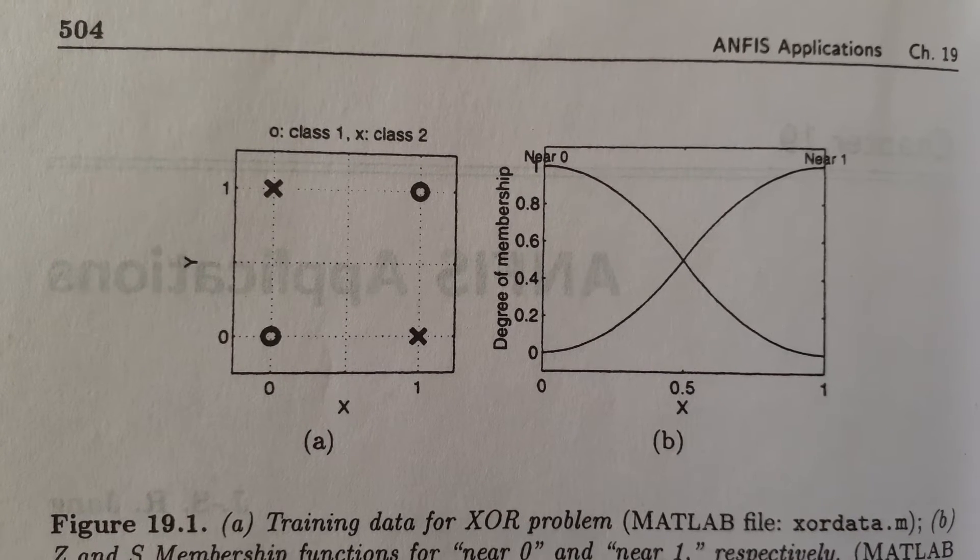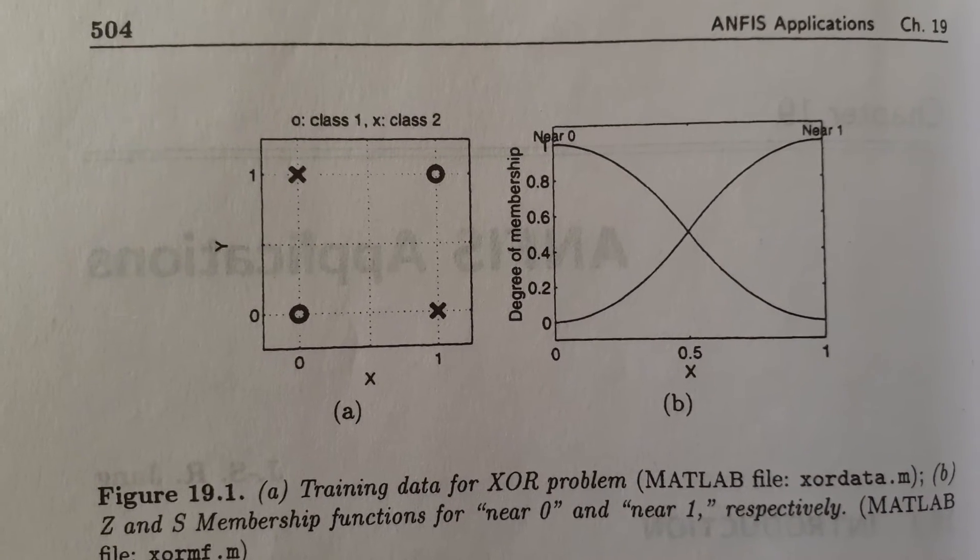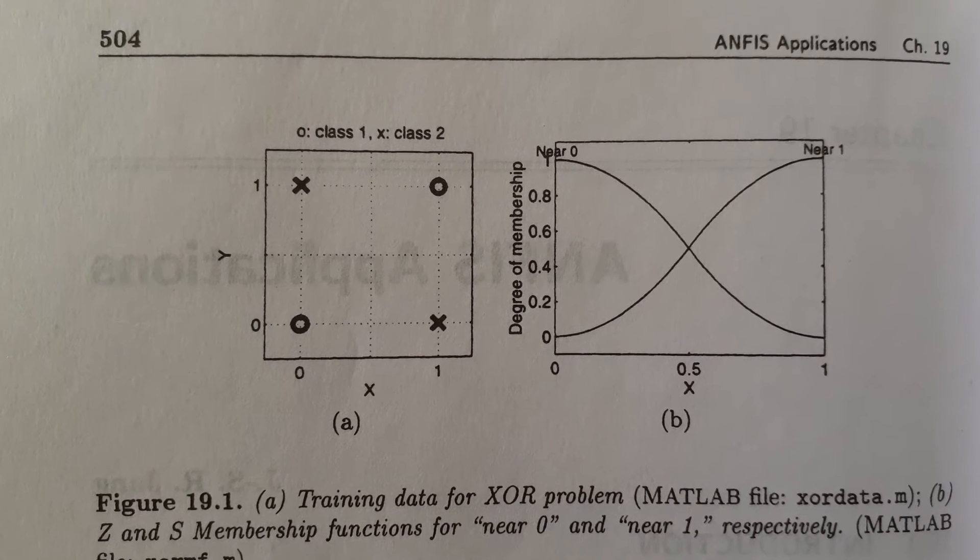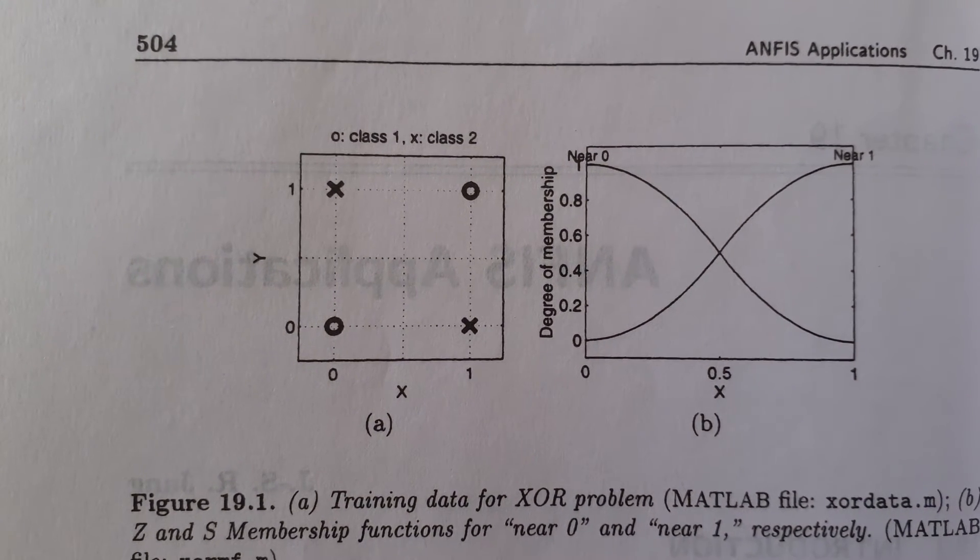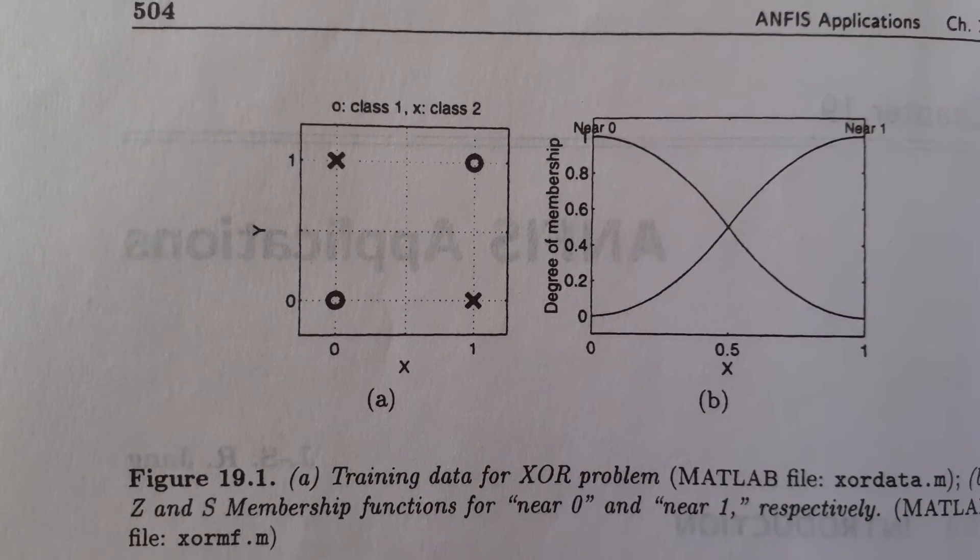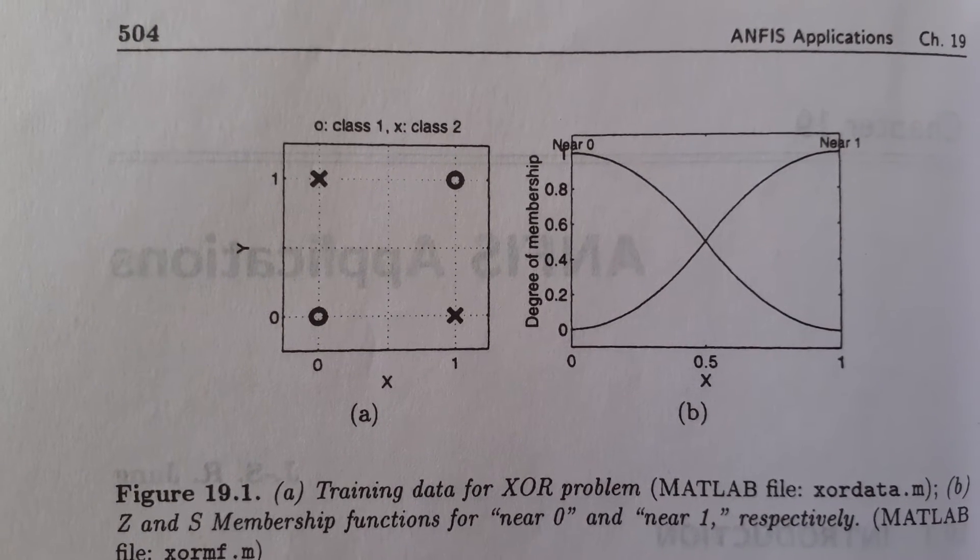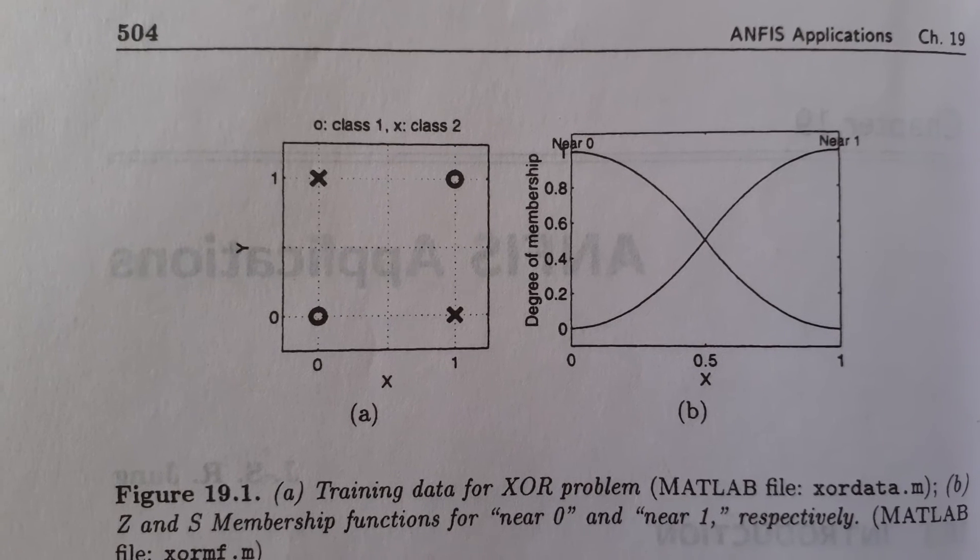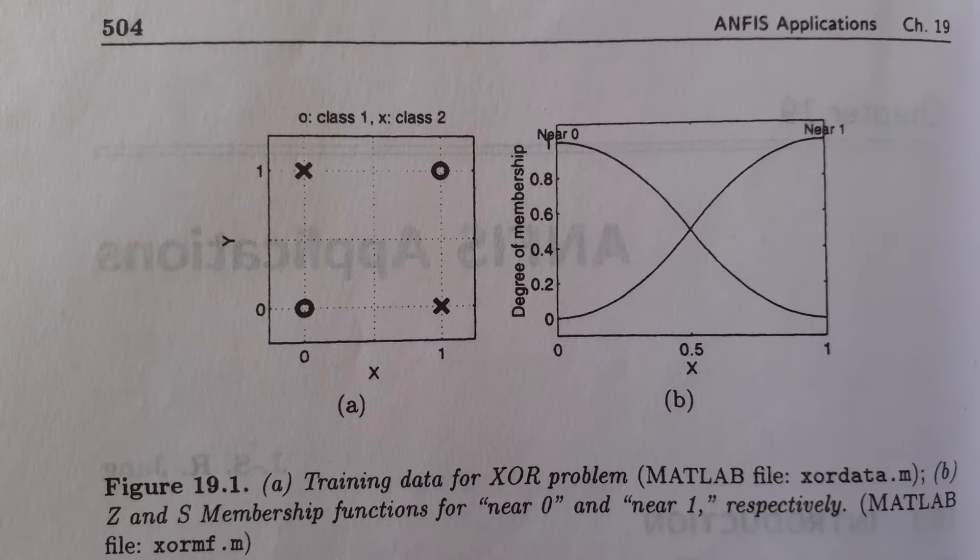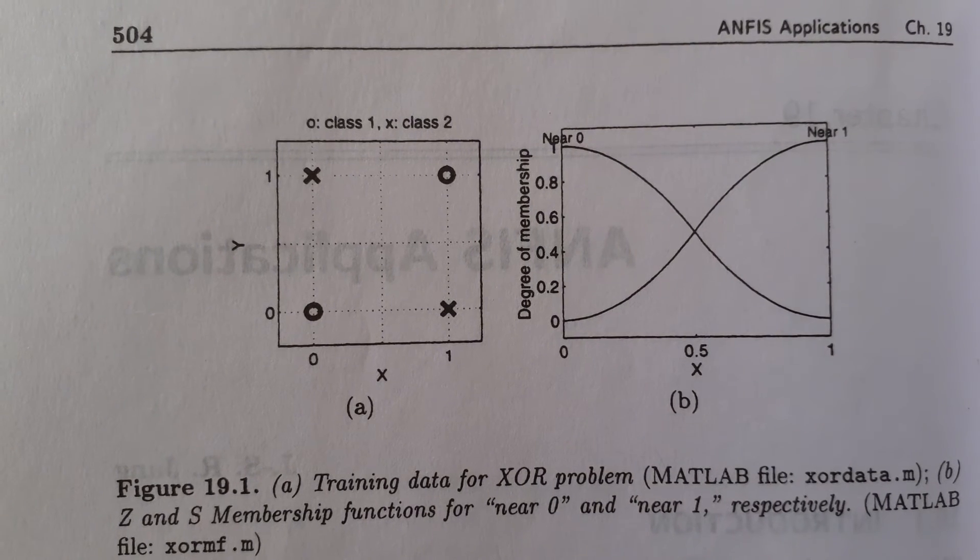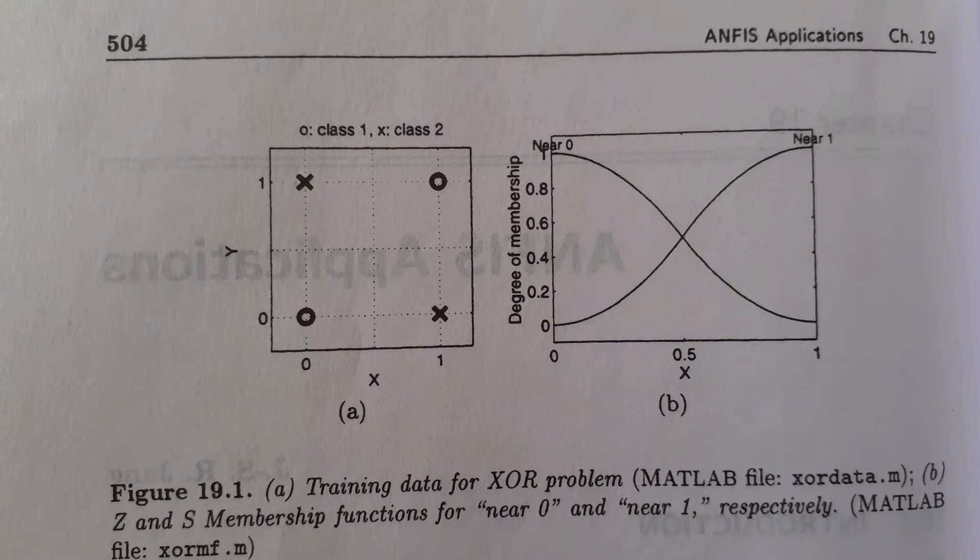Creating a fuzzy rule set for solving the XOR problem: Rule 1, if x is near 0 and y is near 0, then output is equal to 0. Rule 2, if x is near 0 and y is near 1, then output is equal to 1. Rule 3, if x is near 1 and y is near 0, then output is equal to 1. Rule 4, if x is near 1 and y is near 1, then output is equal to 0. If input data x, y is close to one of the prototypes, it is then assigned to that prototype class.